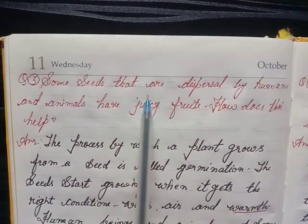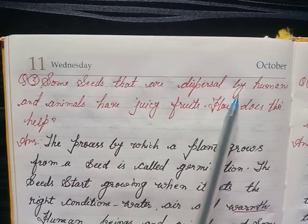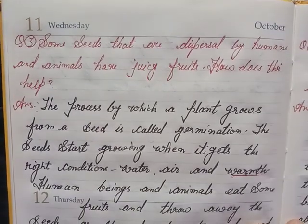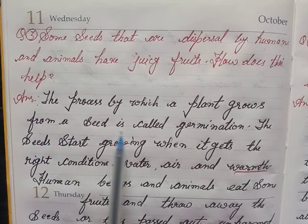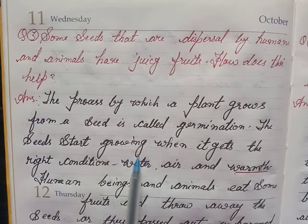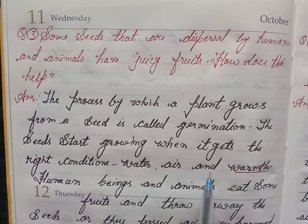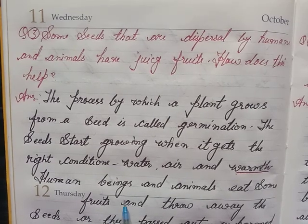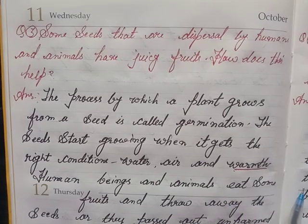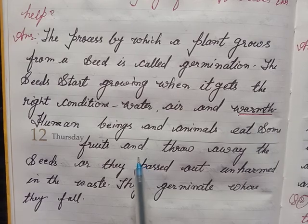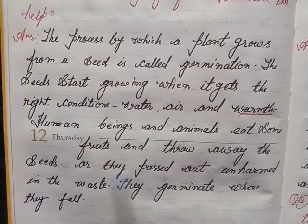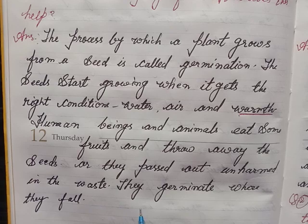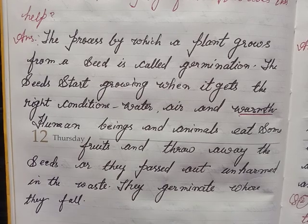Question 3: Some seeds that are dispersed by humans and animals have juicy fruits. How does this help? Answer: Human beings and animals eat some fruits and throw away the seeds. The seeds pass unharmed in the waste, and they germinate where they fall.